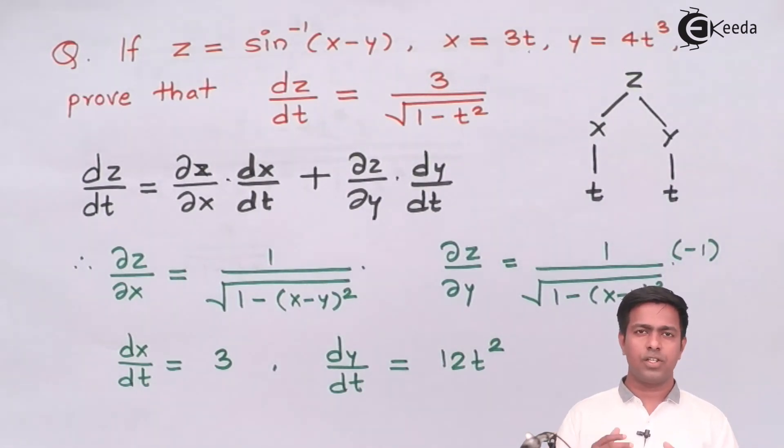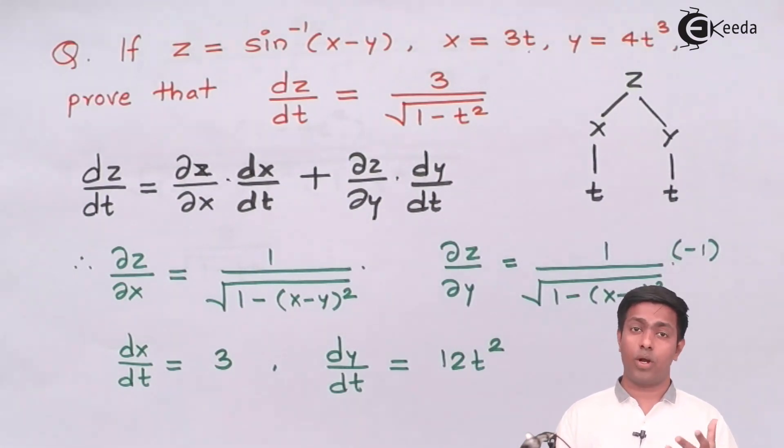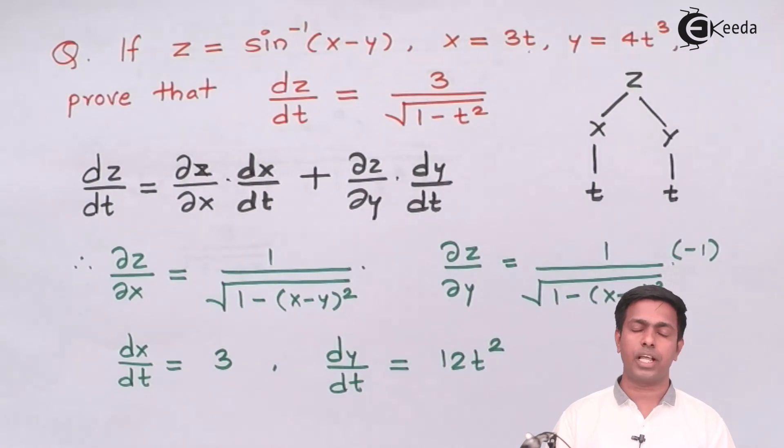We have proved that dz/dt equals 3 over √(1 minus t²). We will do one more numerical on composite functions, so keep watching the next video. Thank you very much.